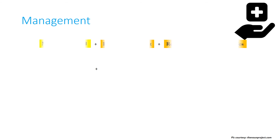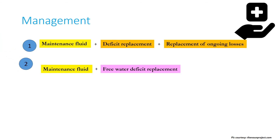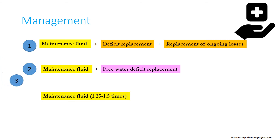There are three approaches to correcting hypernatremia. First: provide maintenance fluid plus deficit replacement plus ongoing losses. Second: maintenance fluid plus free water deficit replacement. Third: give maintenance fluid at 1.25 to 1.5 times the normal rate — this approach is also mentioned in Nelson's.